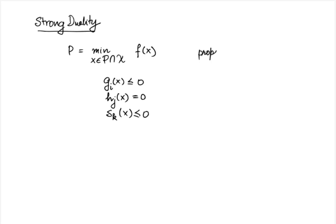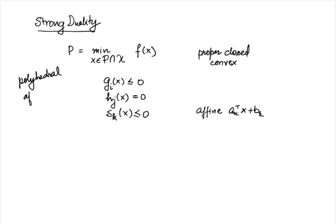Here f and g_i are proper closed convex functions. Further, h_j and s_k are affine functions — that is, they are of the form a_k transpose x plus b_k. The set T is polyhedral, meaning it can be written in the form of affine inequalities and equalities. Further, the set calligraphic X is a subset of the domain of the problem, which is the intersection of the domains of f and the g_i's, and is closed and convex.